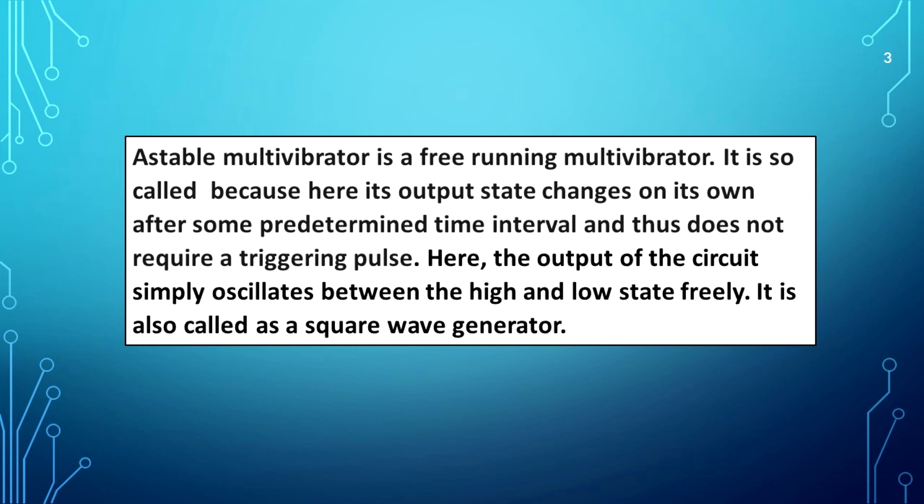An astable multivibrator is a free running multivibrator. It is so called because its output state changes on its own after some pre-determined time interval and thus does not require a triggering pulse. The output of the circuit simply oscillates between the high and low state freely. It is also called a square wave generator.